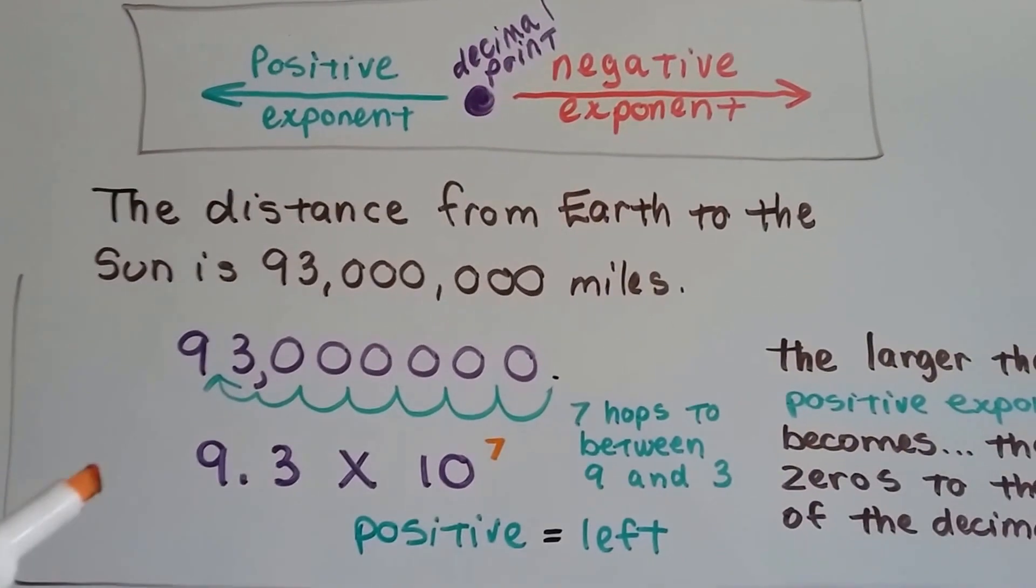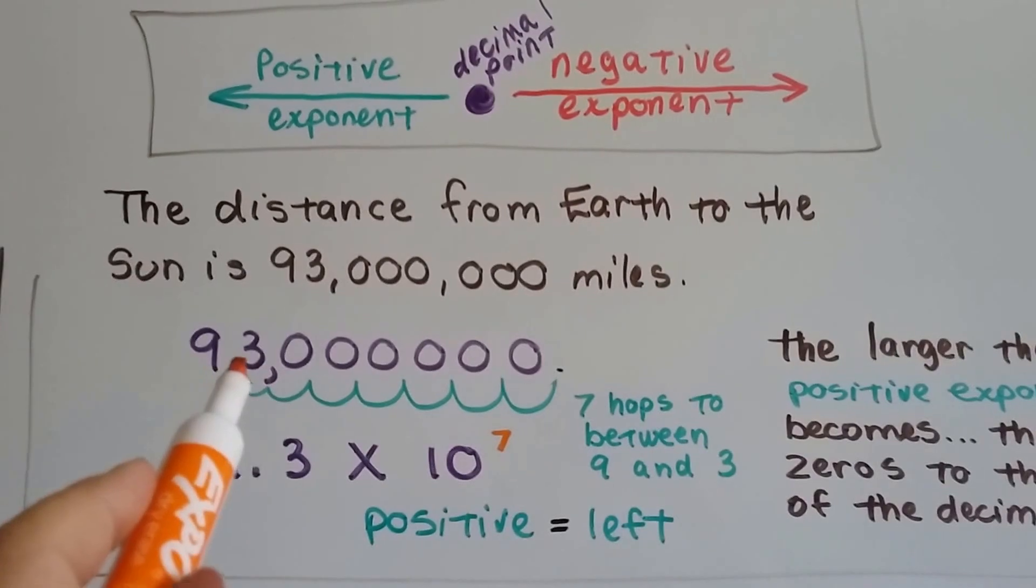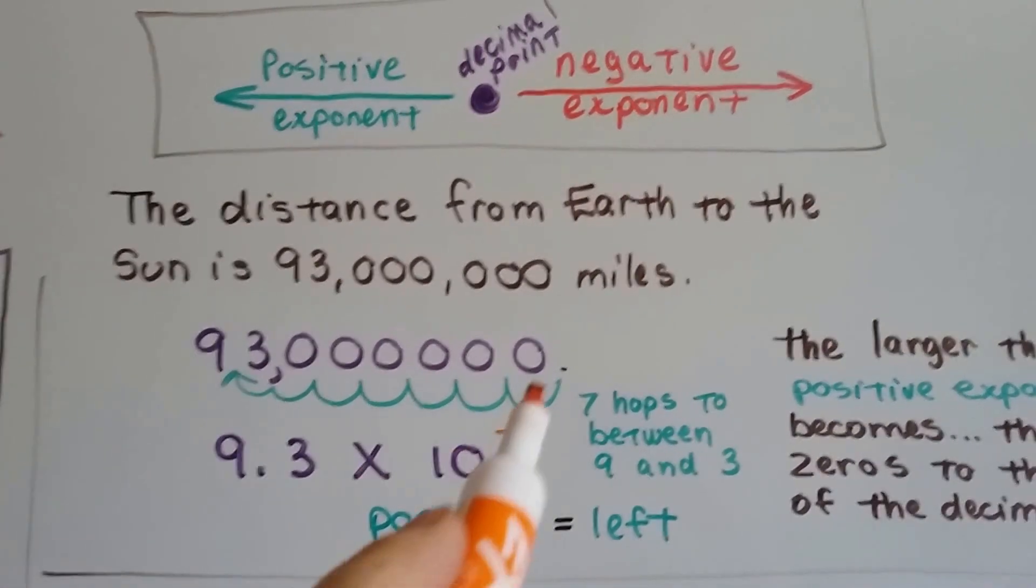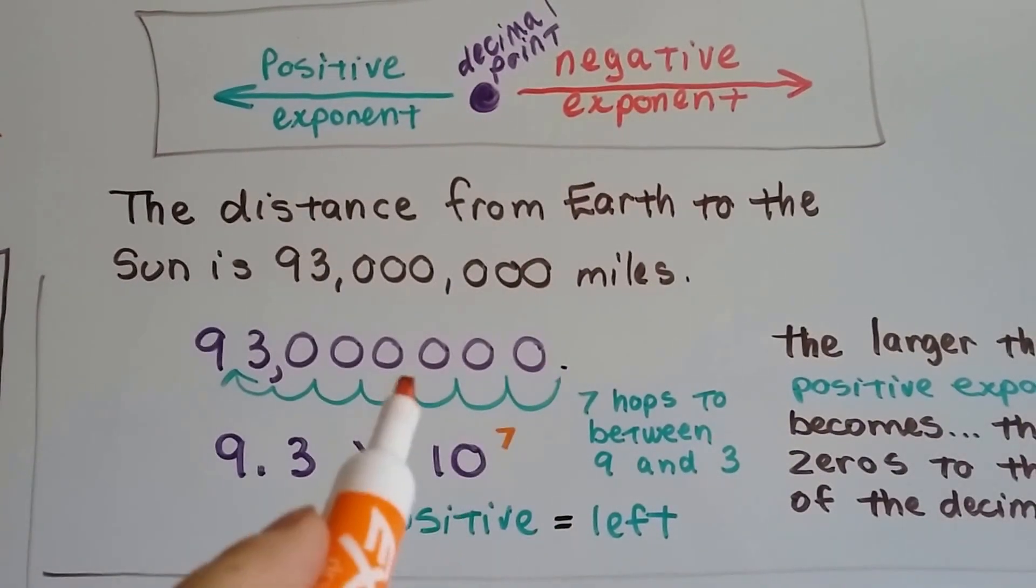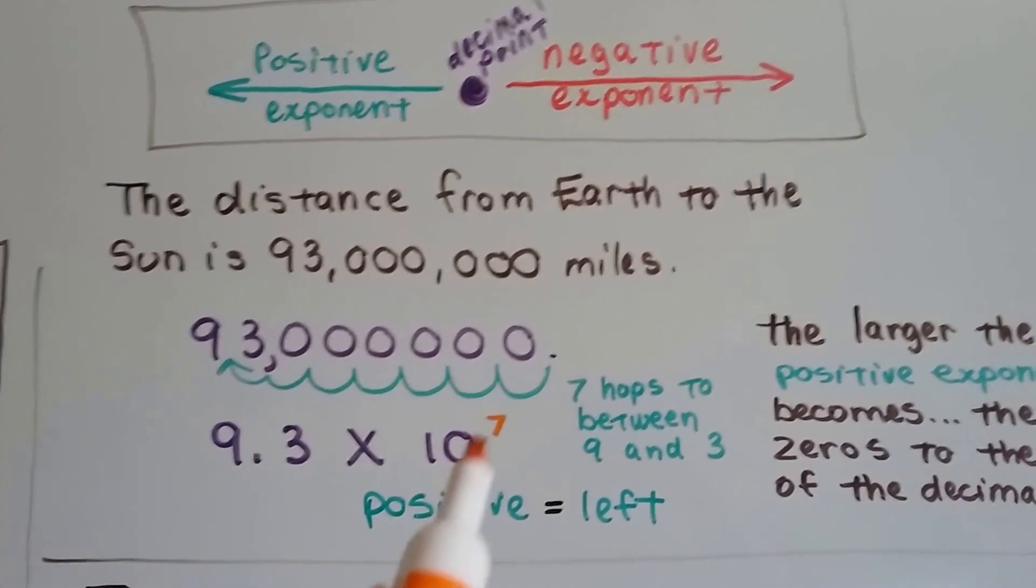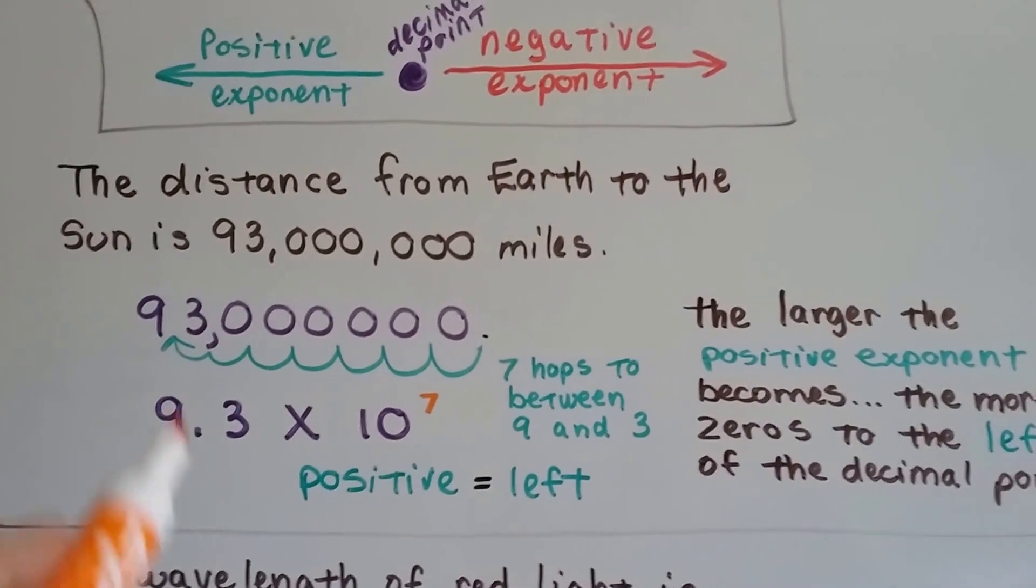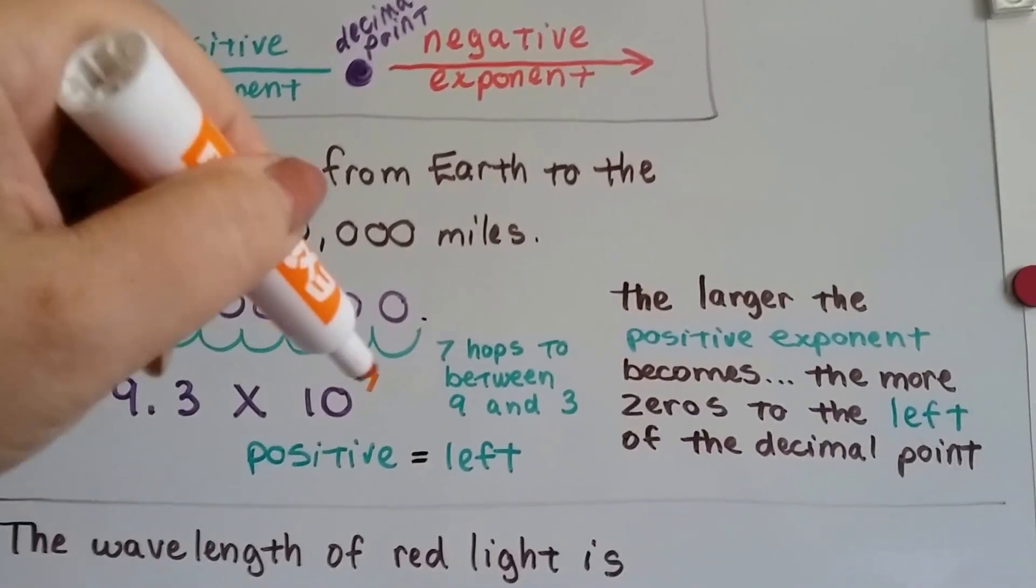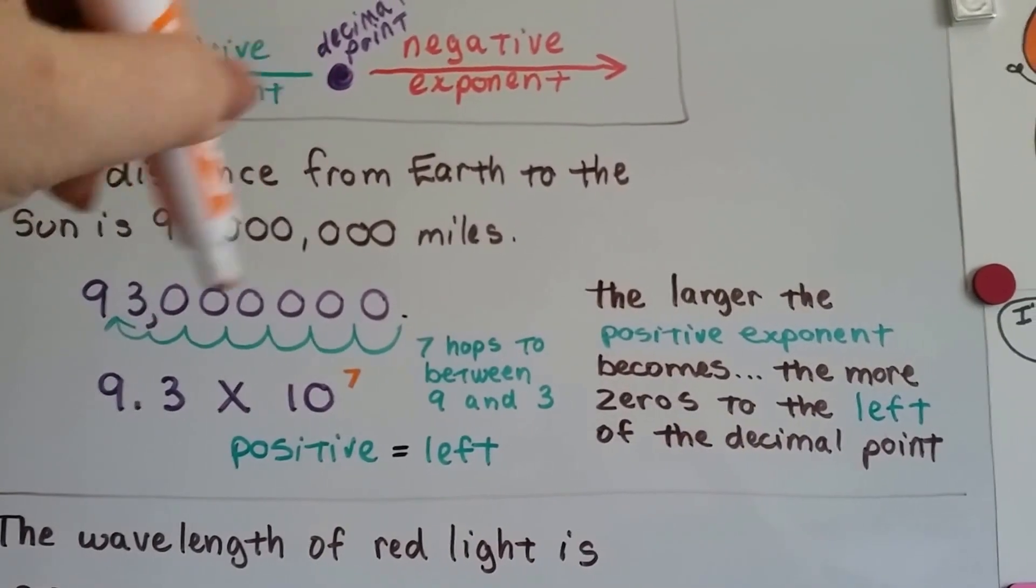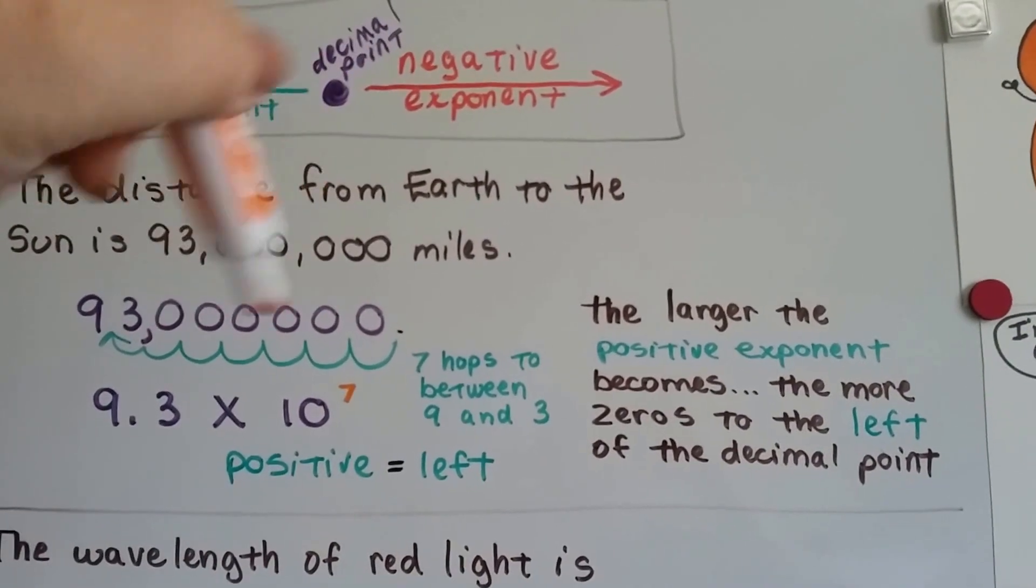The distance from Earth to the Sun is 93 million miles. We've got a decimal point right here and we're heading this direction to put the decimal point in between the 9 and the 3 to write it as scientific notation. We go 7 hops. 1, 2, 3, 4, 5, 6, 7 hops. So it becomes 9.3 times 10 to the 7th. And it's positive. We went left. It took 7 hops to get in between that 9 and that 3. And the larger this positive exponent becomes, the more zeros there are between that number and this decimal point. To the left of the decimal.